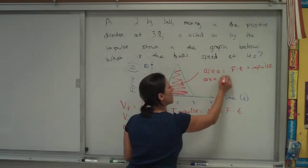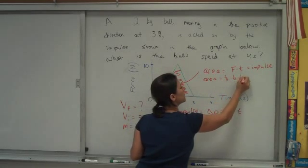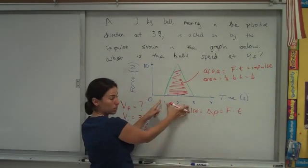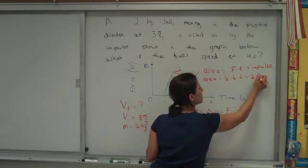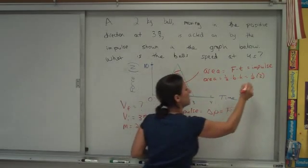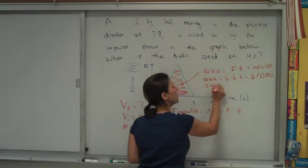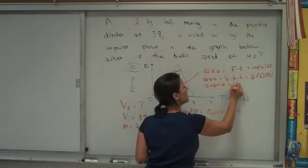Area is one-half times base times height. The base goes from t equals 1 to t equals 3, so 2 seconds. The height from 0 to 10 is 10 newtons. So we've got the area, which represents the impulse, as 10 newton-seconds.